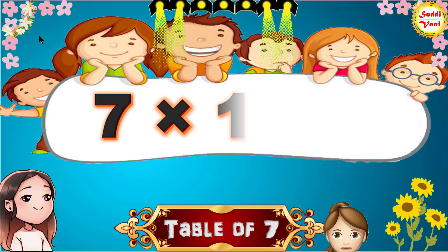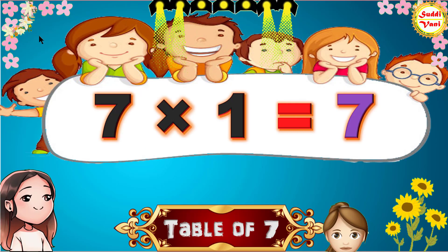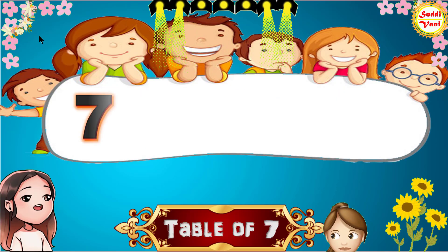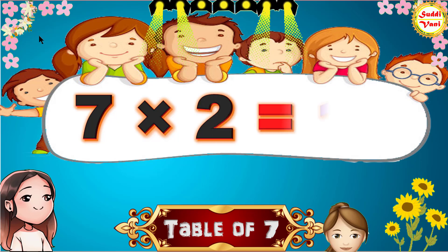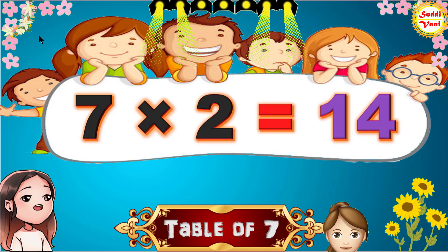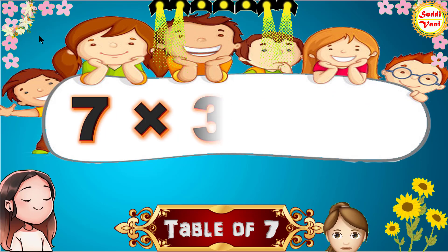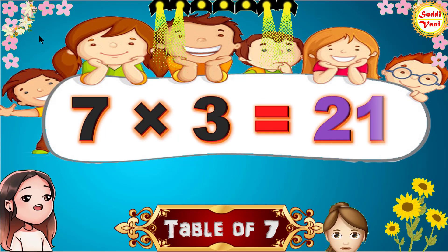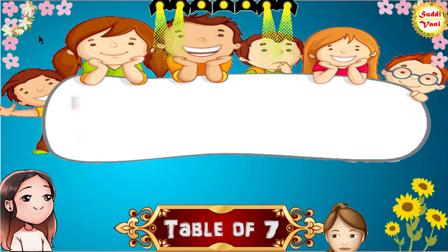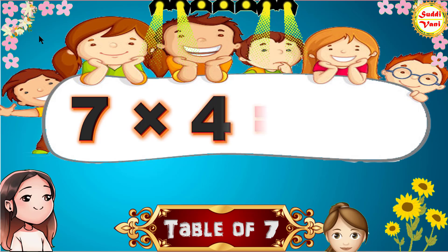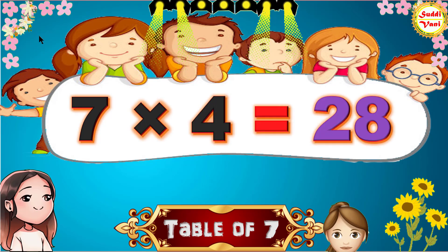7 1s are 7, 7 2s are 14, 7 3s are 21, 7 4s are 28.